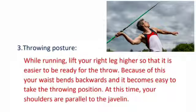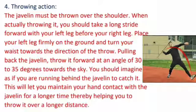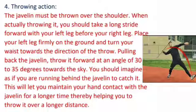Third, throwing posture. While running, lift your right leg higher so that it is easier to be ready for the throw. Because of this, your waist bends backwards and it becomes easy to take the throwing position. At this time, your shoulders are parallel to the javelin. For the throwing action, the javelin must be thrown over the shoulder. When actually throwing it, take a long stride forward with your left leg before your right leg. Place your left leg firmly on the ground and turn your waist towards the direction of the throw. Pulling back the javelin, throw it forward at an angle of 30-35 degrees towards the sky. You should imagine as if you are running behind the javelin to catch it. This will let you maintain hand contact with the javelin for a longer time, thereby helping you to throw it over a longer distance.